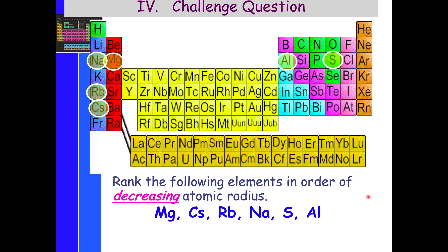Challenge question: rank the following elements in order of decreasing atomic radius — magnesium, cesium, rubidium, sodium, sulfur, and aluminum. The first is cesium, closest to francium; then rubidium, then sodium, then magnesium, then aluminum, and sulfur last.